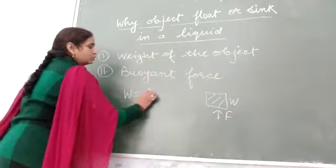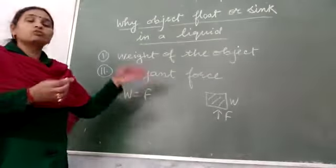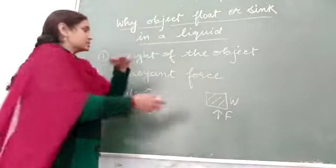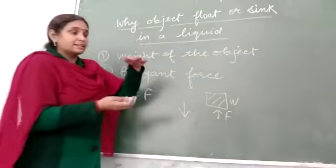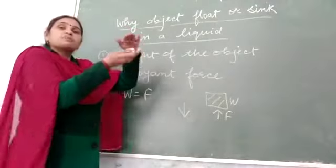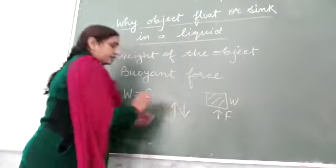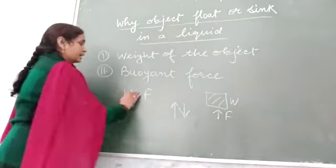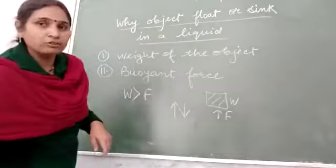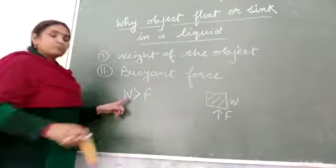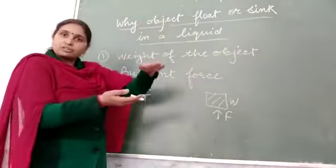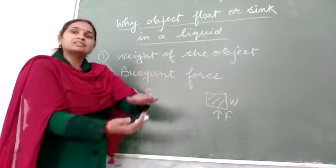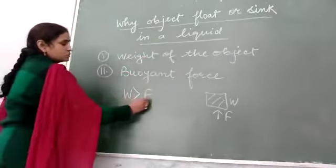If W equals F - if weight of the body and buoyant force are equal - the body will float on the surface. Weight of the body works downward while force works upward. But when weight is more, the downward pressure causes the body to start moving downside. When upthrust is less, the body will sink. In this situation, the body will sink.